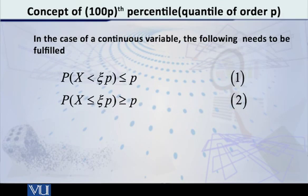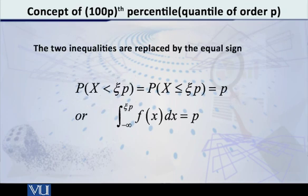And what is that? The probability of capital X being less than xi p, which is the same as the probability of X being less than or equal to xi p, that has to be equal to p. So, we take the integral from minus infinity up to xi p and equate that integral to p.